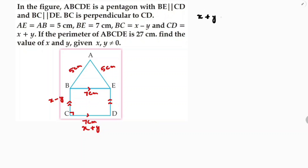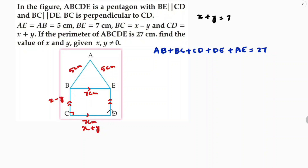The perimeter of the pentagon ABCDE is 27. Adding all the sides: AB plus BC plus CD plus DE plus AE equals 27. Substituting the values: AB is 5, BC is x minus y, CD is 7, and DE is also x minus y.